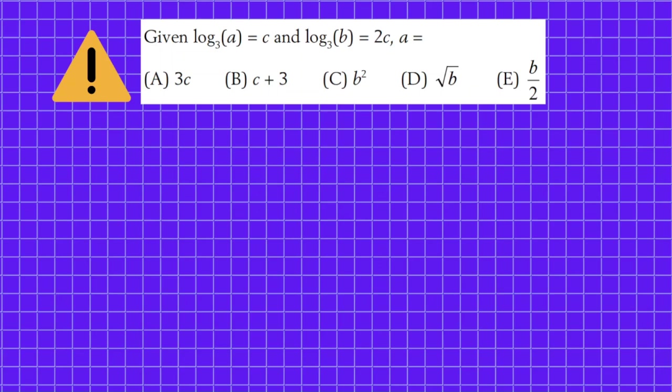The given information is log A to the base 3 equals C, log B to the base 3 equals 2C, and you have to find out the value of A. Four options are given below and you have to choose the right answer. I'll give you time, pause the video and try to solve this question.